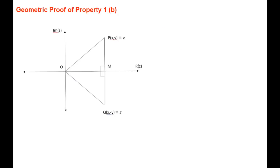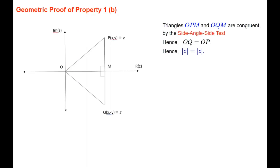Similarly for property 1b, we plot point p representing z by going across x and up y. The conjugate of z is x minus iy, so point q is plotted by going across x and down minus y. Again we have two triangles congruent by the side-angle-side test: side om is common to both, side mp equals mq, and the included right angles are equal. Hence oq equals op, which is what the result is saying.